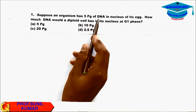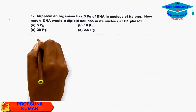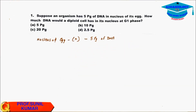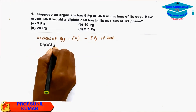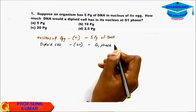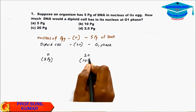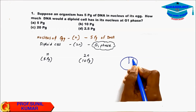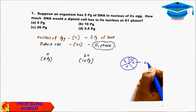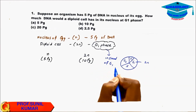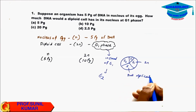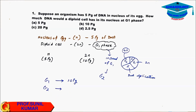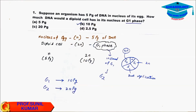Question 1: Suppose an organism has 5 picograms of DNA in the nucleus of an egg (n = 5 pg). The diploid cell (2n) in G1 phase will have 10 picograms. The cell cycle has G1, S, G2, and M phase. In G1 it is 2n. In G2, after DNA replication in S phase, it becomes 4n, so 20 picograms. Since the question asks about G1 phase, the answer is 10 picograms.